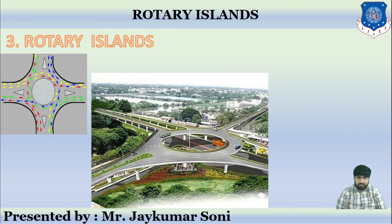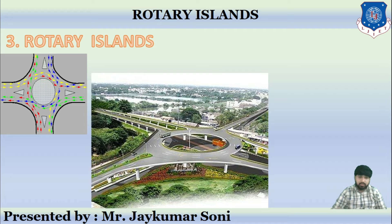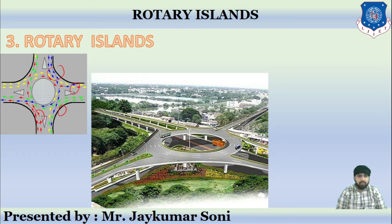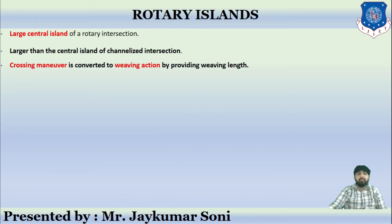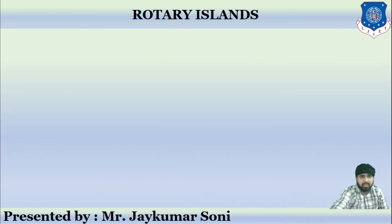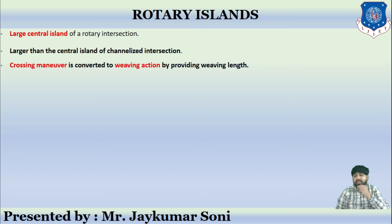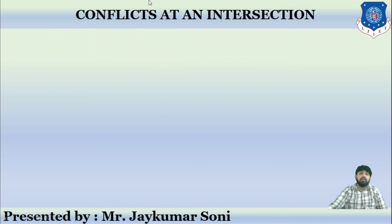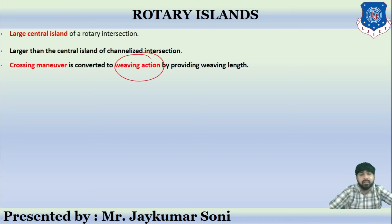Then comes the rotary island. You have already seen this kind of thing — in Ahmedabad, at the Durpan Circle or Navarampura area, you can observe rotary islands. Rotary means roundabout, where rotational movement takes place. It has a large central island — it consumes a large central area, larger than the central island of a channelized section or any other intersection type. The crossing maneuver is converted to a weaving action by providing a weaving length, which we will discuss in detail later.